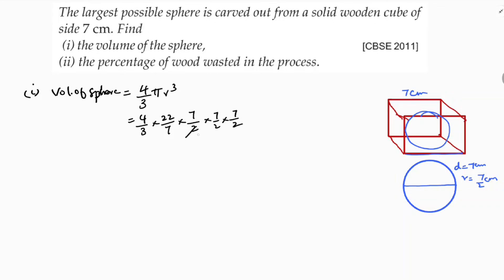Now simplifying: the 7s in the numerator and denominator cancel. We get 11 times 49 by 3. Calculating 11 times 49: that gives 539. So volume of sphere is 539 by 3 centimeter cube.